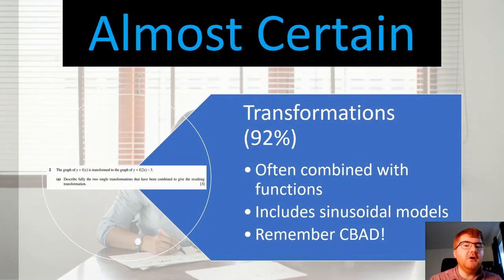Our next almost certain topic is transformations appearing at 92%. This is often combined with functions, which I'm going to mention separately in my certain section. This can also include sinusoidal models. So remember CBAD, the order in which you actually work with a sinusoidal model. I've given you an example question here where they ask you, OK, f of 2 of x minus 3, what is that transformation? So this is one that often gets understudied. Please do focus on this too.